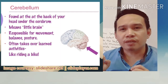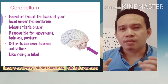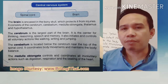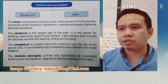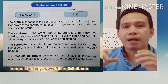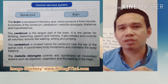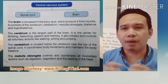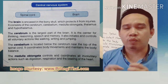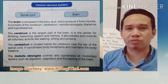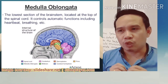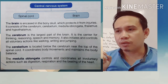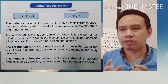The cerebellum is located near the top of the spinal cord, below the cerebrum. It coordinates body movement and maintains body balance — that is why we are able to walk properly, run, go hiking, mountain climbing, jogging, or do any strenuous exercises. Another part of the brain is the medulla oblongata, which controls and coordinates involuntary actions such as digestion, respiration, and the beating of our hearts.